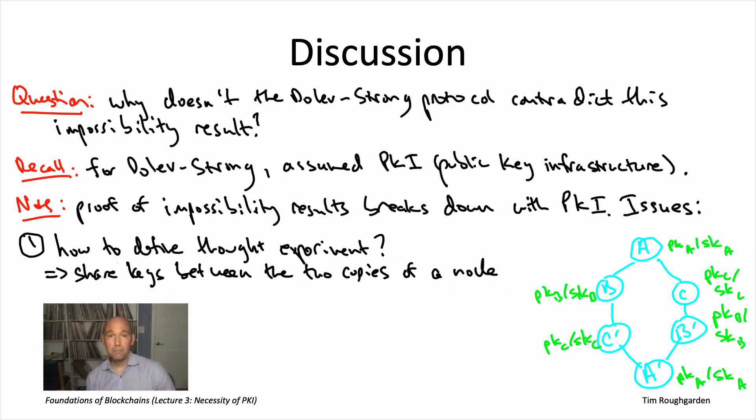And remember, we needed to define the Byzantine node strategy in this way, so that the two honest nodes operated identically, whether or not they were in the bonafide instance of Byzantine broadcast, or they were in the six node thought experiment. And the problem now is that with the PKI assumption, under our ideal signatures assumption that you can't forge signatures, a Byzantine node may simply be unable to carry out that simulation strategy.